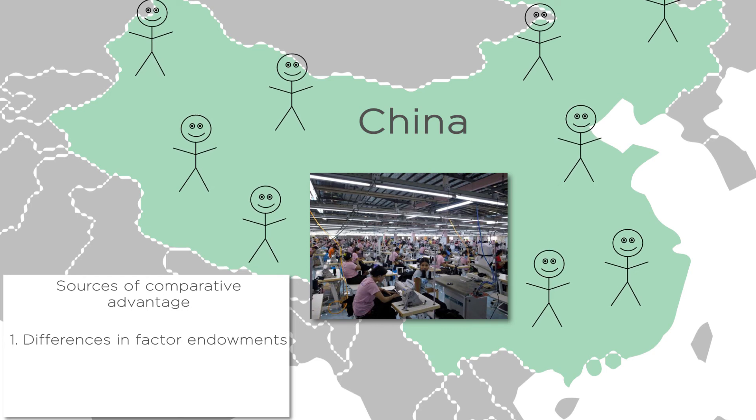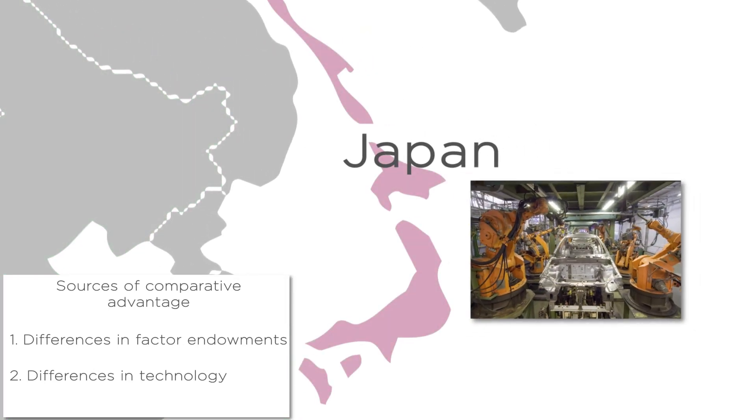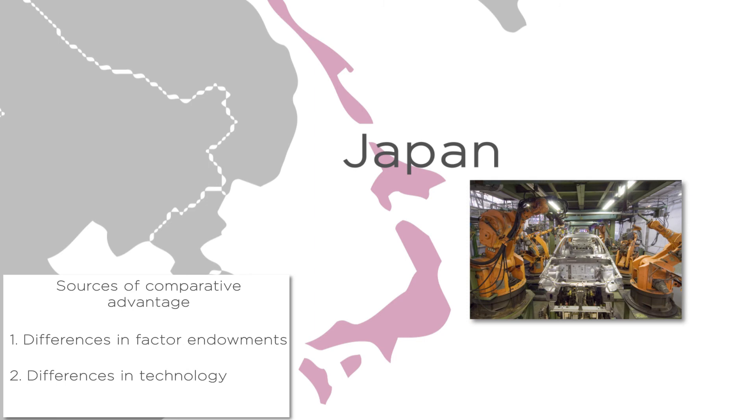The second source of comparative advantage is differences in technology. For example, Japan is a major exporter of automobiles, despite no natural advantage in factor endowments. But Japan was a leader in developing the technology for the modern automobile. As a result, it became cheaper to produce quality cars in Japan than in many other countries. This gave Japan a comparative advantage in car production.